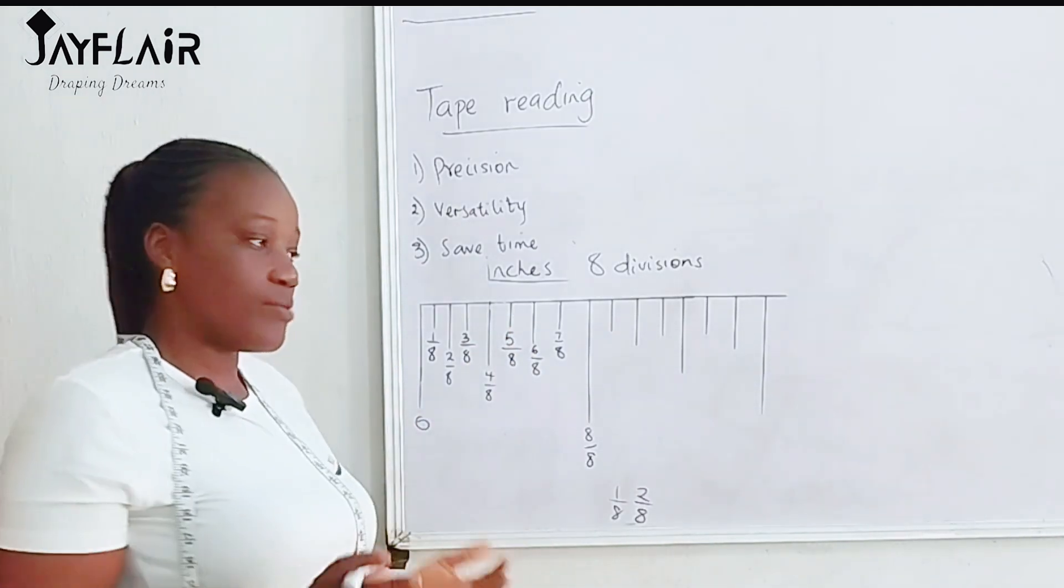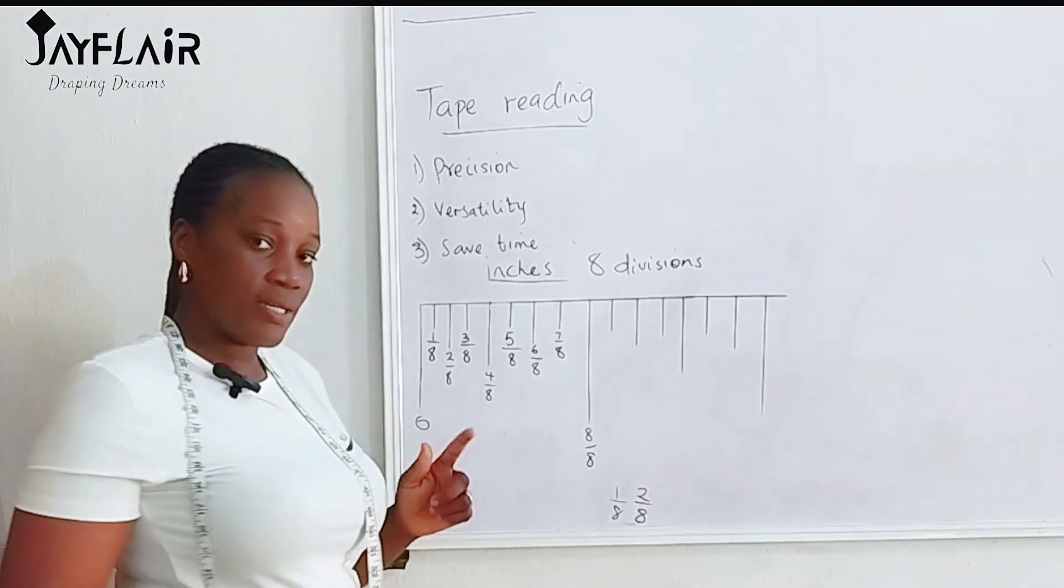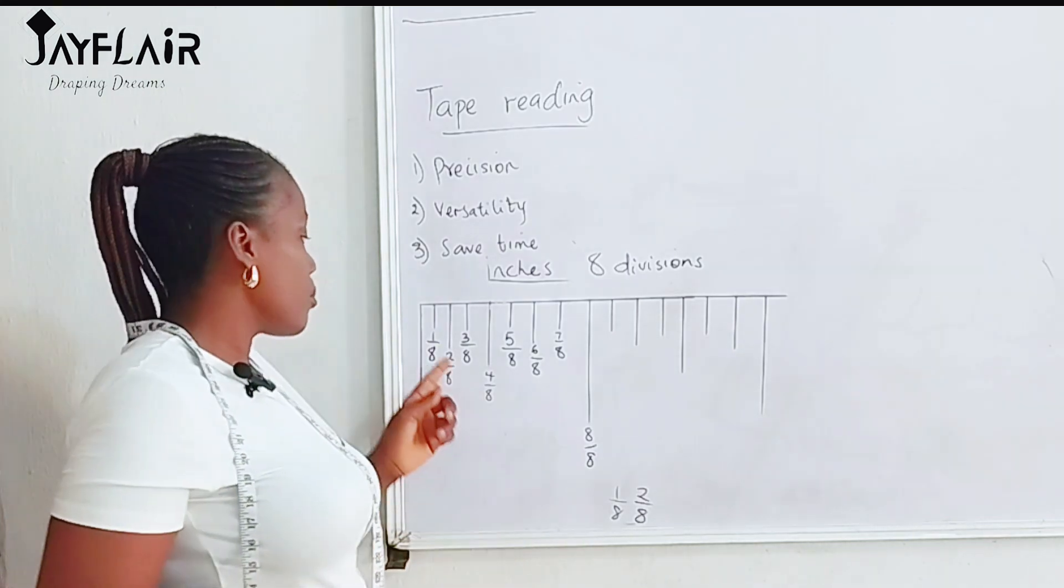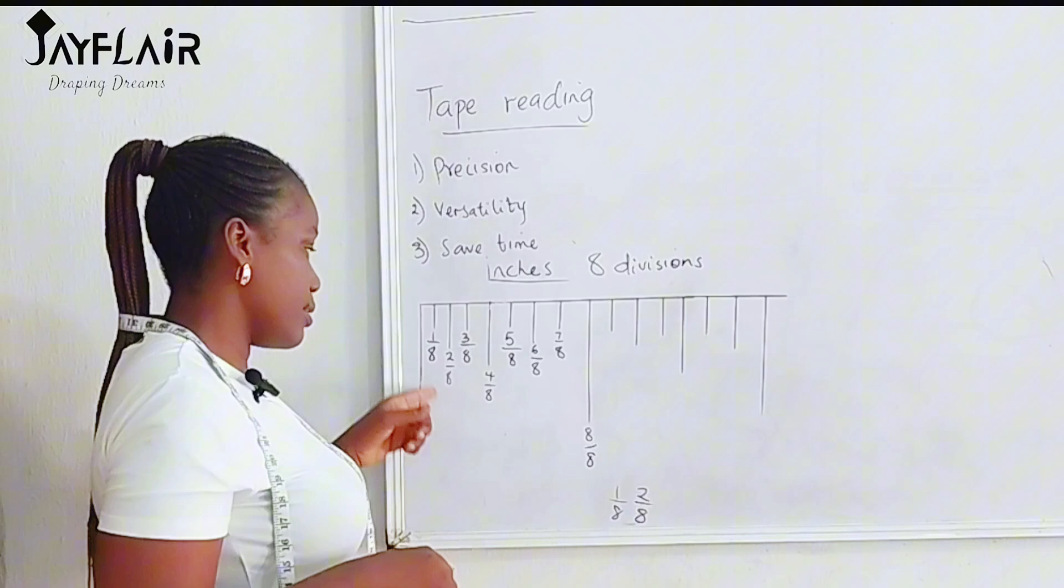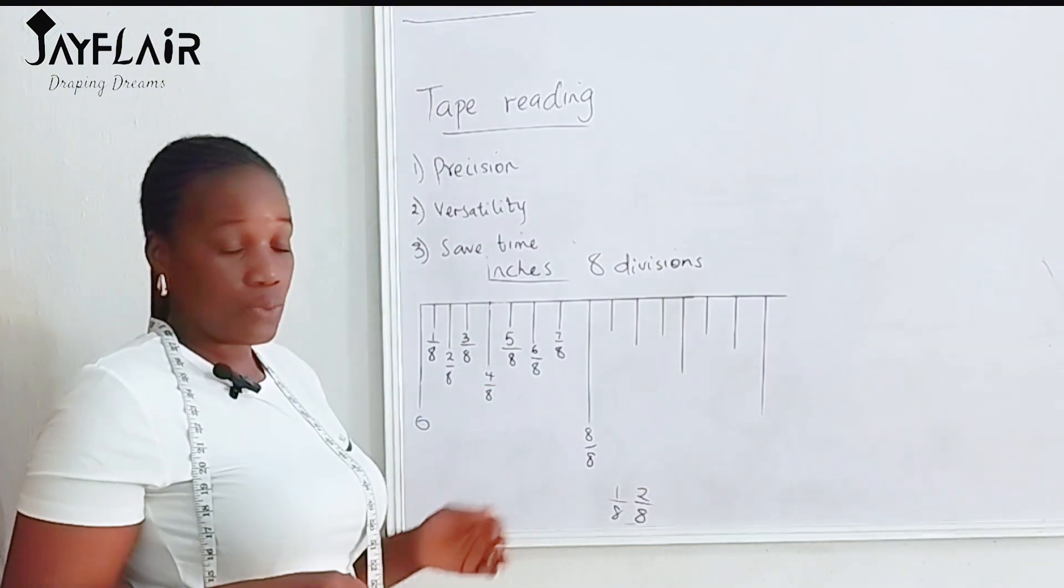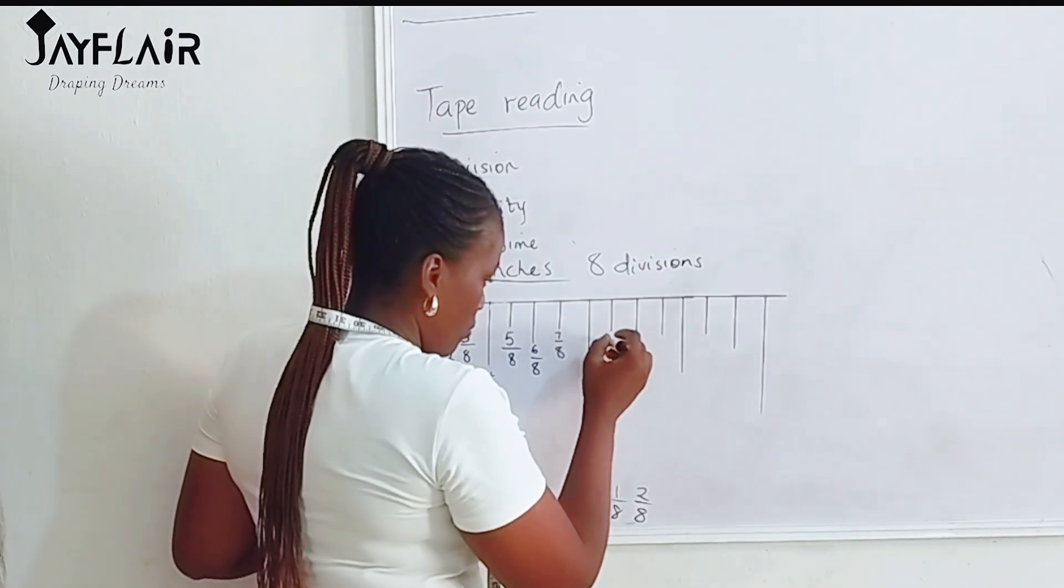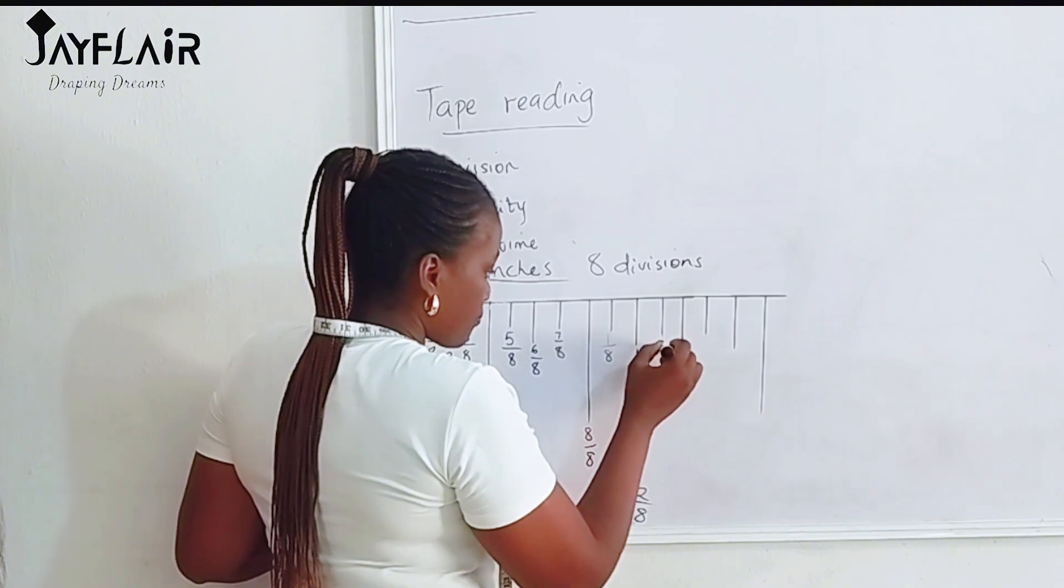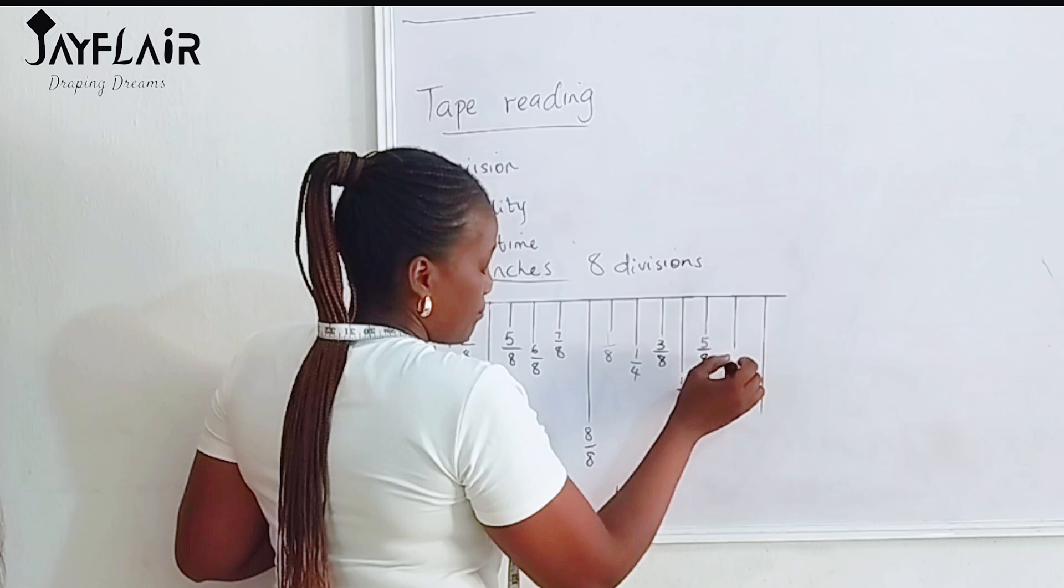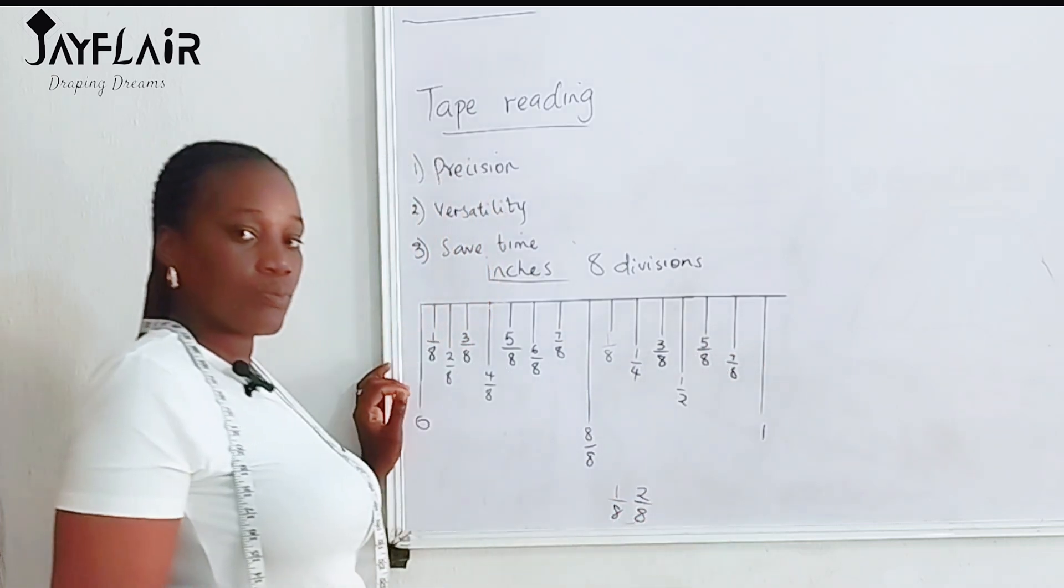But you know we can still simplify. That's mathematics, meaning that we can still break down. But any number that has odd number and even number cannot be divided further. But we can divide the ones that have even number and even number. We can simplify further. And I'm going to write it here: 1 over 8, 1 over 4, 3 over 8, 1 over 2, 5 over 8, 7 over 8, and this one becomes 1.